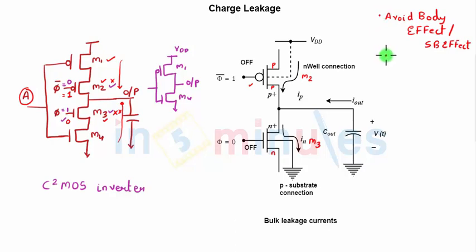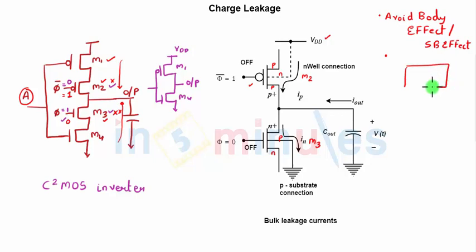There are cases where the body of the pull-up (PMOS) — whose substrate or bulk terminal is N-type — is connected to VDD, and the NMOS substrate, which is P-type, is connected to ground. For an NMOS with a P-type substrate, we connect that substrate towards ground, as shown in the cross-sectional view. The same applies vice versa for PMOS.